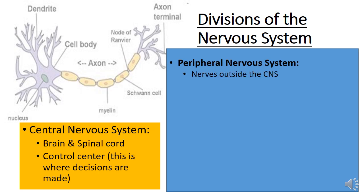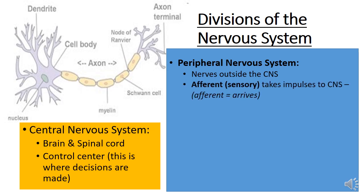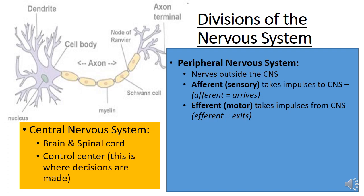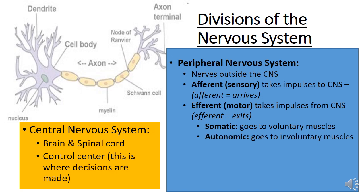The other division is the peripheral nervous system — any nerves outside of the CNS, or central nervous system. Get used to those abbreviations: CNS for central nervous system and PNS for peripheral nervous system. Within the PNS we have afferent or sensory neurons, which take impulses to the central nervous system — think 'afferent arrives,' both starting with A. Then we have efferent or motor neurons, which take impulses from the central nervous system back out — think 'efferent exits,' both starting with E.